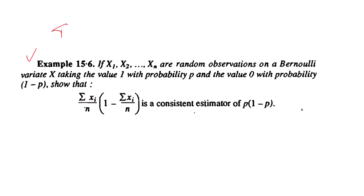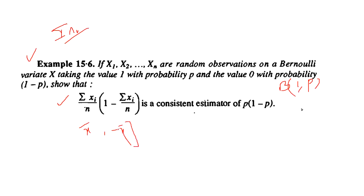Next example related to the invariance property: if x₁, x₂, ..., xₙ are random observations from a Bernoulli distribution — one trial with probability of success p and failure q — our test statistic is x̄(1 − x̄). We need to check if it is consistent. First, Σxᵢ follows Binomial(n, p), so E[x̄] = p, meaning x̄ is unbiased.